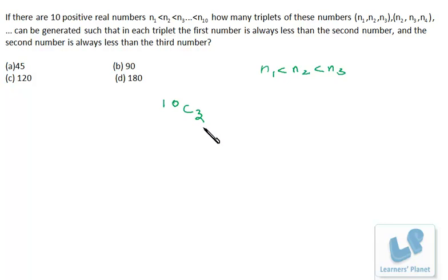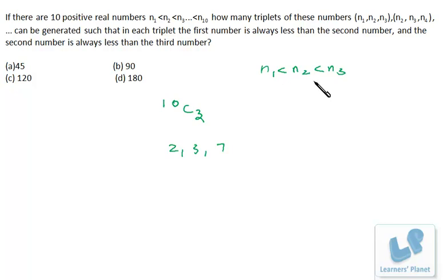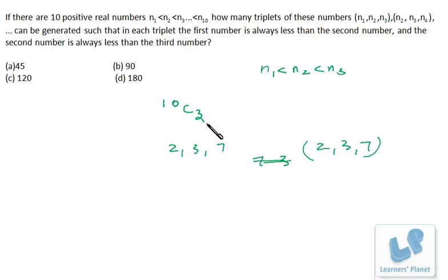In every triplet there will be three numbers, and these three numbers can be arranged in ascending order in just one single way. Suppose the three numbers selected are 2, 3, and 7. There is a single way to arrange these three numbers in ascending order when N1 < N2 < N3, that is 2, 3, 7. So whatever triplets are being selected, there is a single way of arranging them in ascending order. So the number of triplets is 10C3 only — no need to make any arrangement.